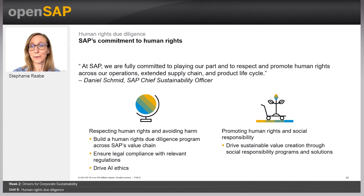To sum it up, SAP is committed to respecting and promoting human rights across our operations, our supply chain, and our products and solutions. We set high standards of fairness, diversity, and inclusion for ourselves and expect all our business partners to do the same. Respect for human rights is central to our long-term commitment to sustainability and the UN Sustainable Development Goals, as well as core to how we execute on our purpose to help the world run better and improve people's lives. For more details, check out the SAP Integrated Report at www.sapintegratedreport.com.